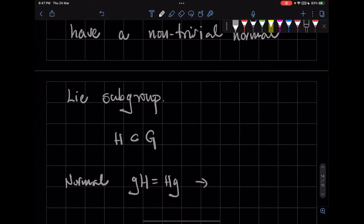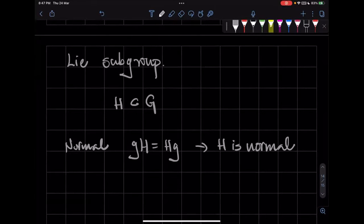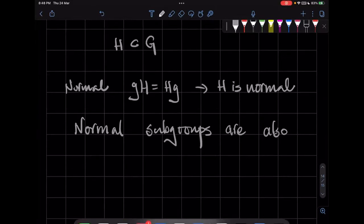So this is H is normal. Another notation that I didn't use before, but I would like to introduce it now, is that a lot of times we call normal subgroups invariant subgroups.